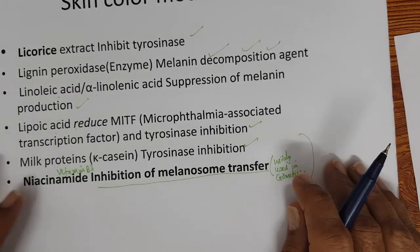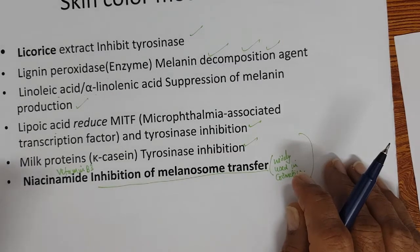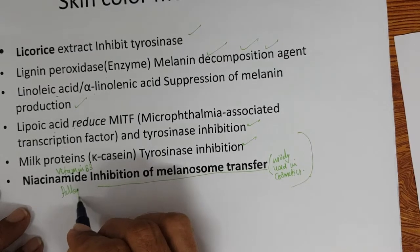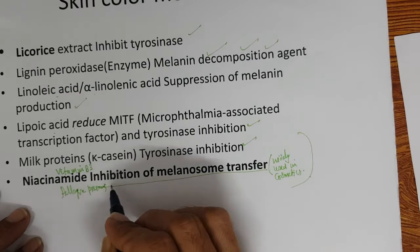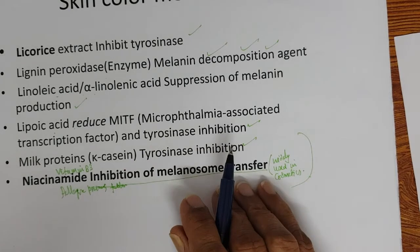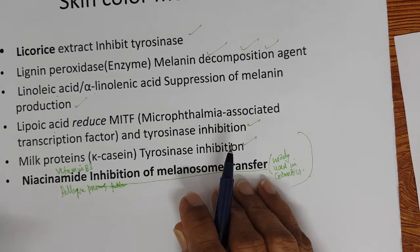Niacinamide has many functions — it inhibits melanosome transfer, and in moisturization it can also initiate synthesis of ceramide lipids. It is a pellagra-preventing factor. Pellagra is a condition where lack of vitamin B3 causes dark patches and makes skin susceptible to sunlight; taking vitamin B3 cures pellagra.